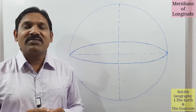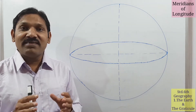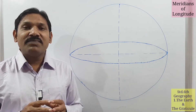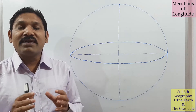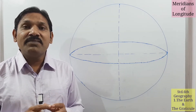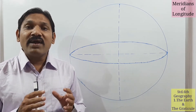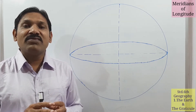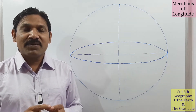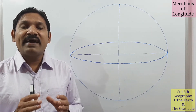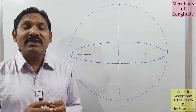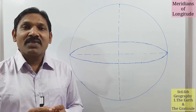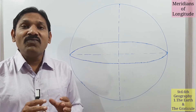Before this, we have studied the imaginary lines, angular distance, parallels of latitude, and the term equator. At the last, we have learned the angular measurement of earth. We have also studied figure number 1.9, which is very important to understand the meridians of longitude. So today we are going to learn the meridians of longitude.